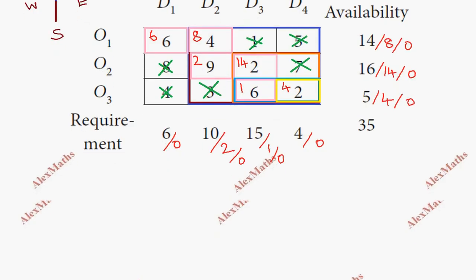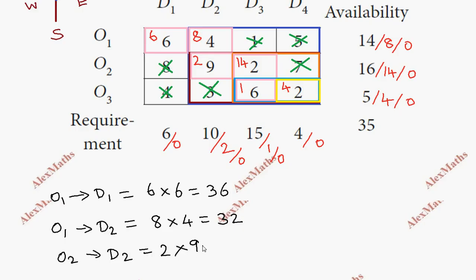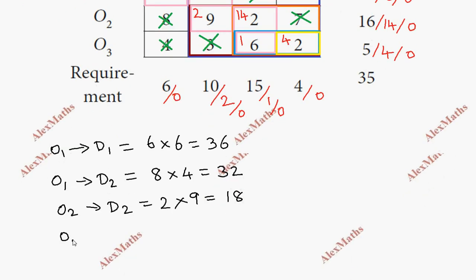Once the final allocation is complete, we create the transportation schedule. O1 to D1: 6 units transported. The cost per unit from this cell is 6, so transportation cost is 6 times 6 equals 36. O1 to D2: 8 units transported. Cost per unit is 4, so 8 times 4 equals 32. O2 to D2: 2 units at 9 per unit equals 18. O2 to D3: 14 units at 2 per unit equals 28.